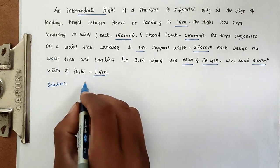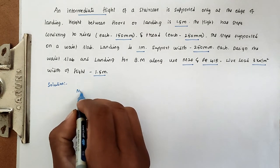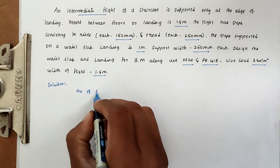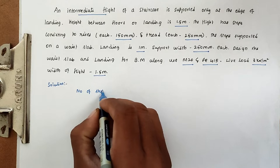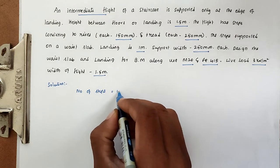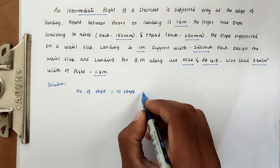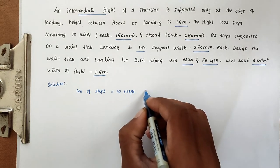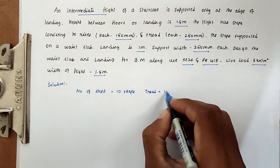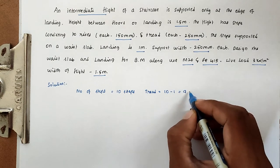For the solution, first we take the number of steps of each flight. Number of steps is 10. So the number of treads is 10 minus 1 equal to 9 treads.